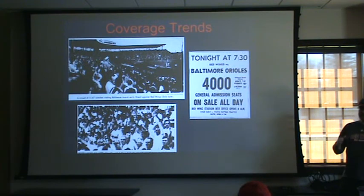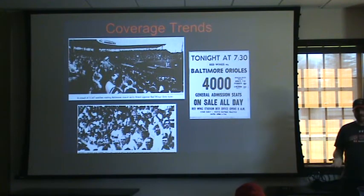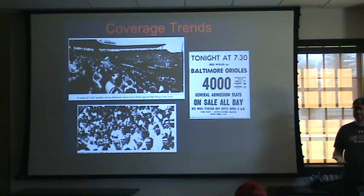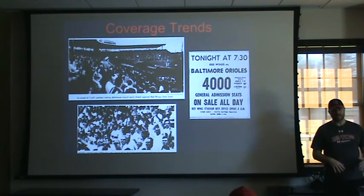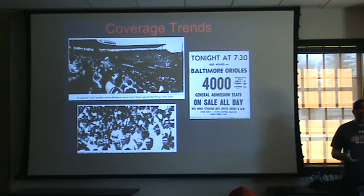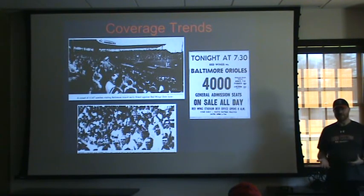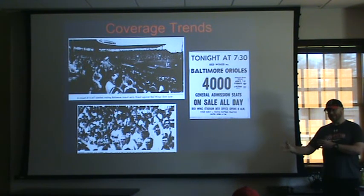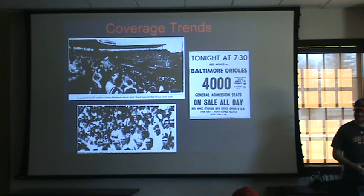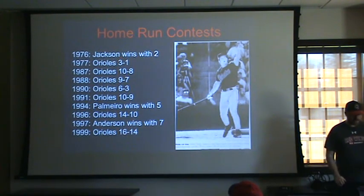One interesting thing I found: particularly in the early years of the series, start times were always either 7:30 or 8 o'clock. The reason was that when the Orioles came to town, they would first have dinner at the Rochester Club. The Orioles typically wouldn't get into town until 3 or 4 in the afternoon, would go have dinner, and then by the time they could get to the ballpark and do batting practice, they had to start the game at 7:30 or 8.